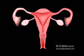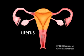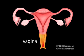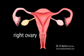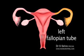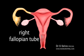This is a diagrammatic representation of the front view of a female reproductive system. This is the uterus. This is the cervix and this is the vagina. This is the left ovary and this is the right ovary. This is the left fallopian tube and this is the right fallopian tube.